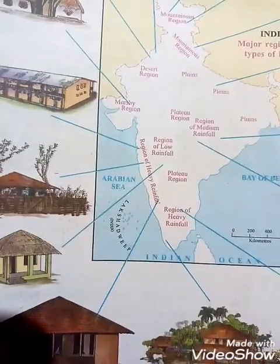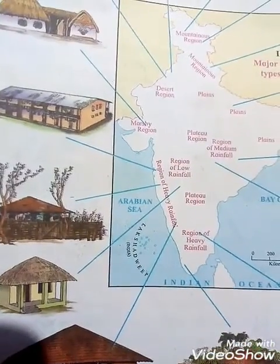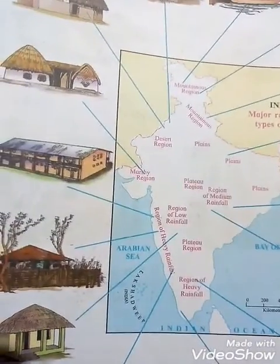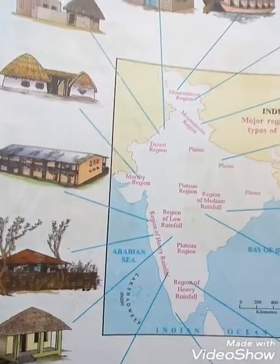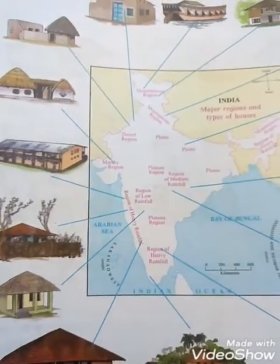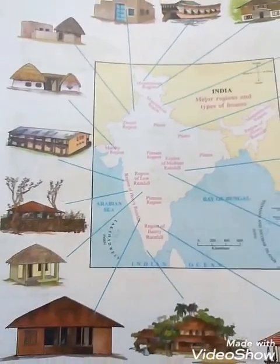In places with heavy rainfall, houses have sloping roofs. In low rainfall areas, a different type of house is there. Houses are built in different places according to their region.